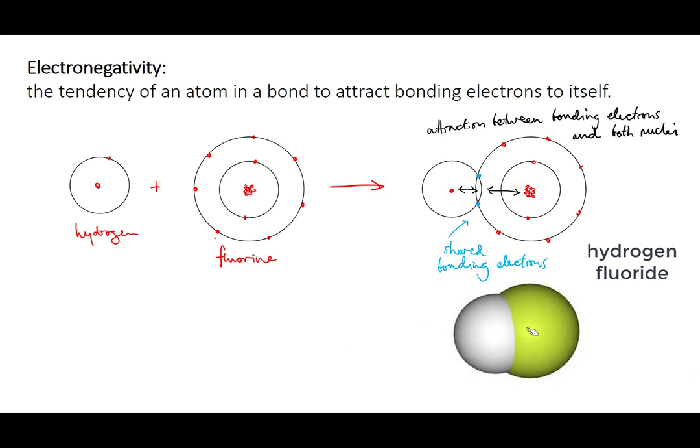The effect of this behaviour is that the fluorine atom effectively has a partial negative charge. The electrons spend more time around it. And the hydrogen, which is a bit electron deficient, has a partial positive charge.